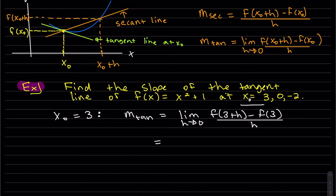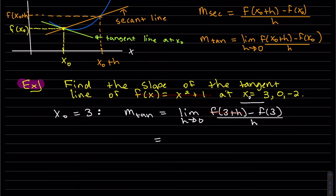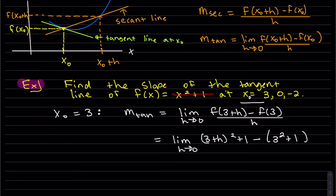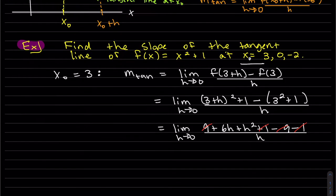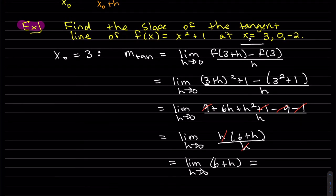We compute f(3+h) by replacing x with (3+h), giving (3+h)² + 1, minus f(3) which is 3² + 1. Expanding and cleaning up, 3h and 3h combine to give 6h. We factor out h so it cancels with the denominator. As h goes to zero, this approaches 6 + 0, which is just 6.